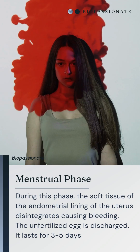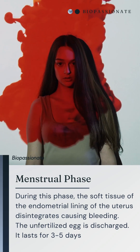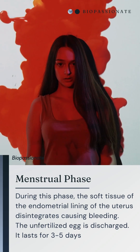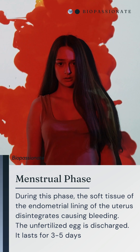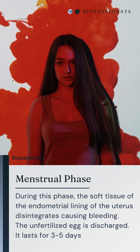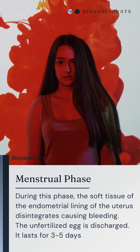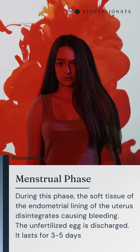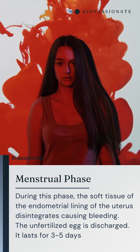During the menstrual phase, the softer tissues of the endometrial lining of the uterus disintegrates, causing bleeding to release the unfertilized egg.